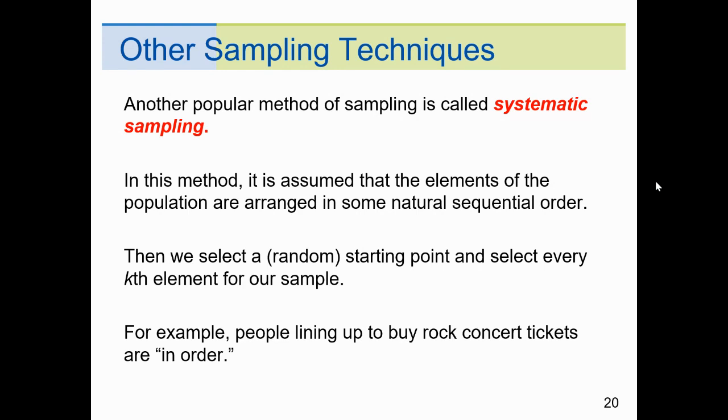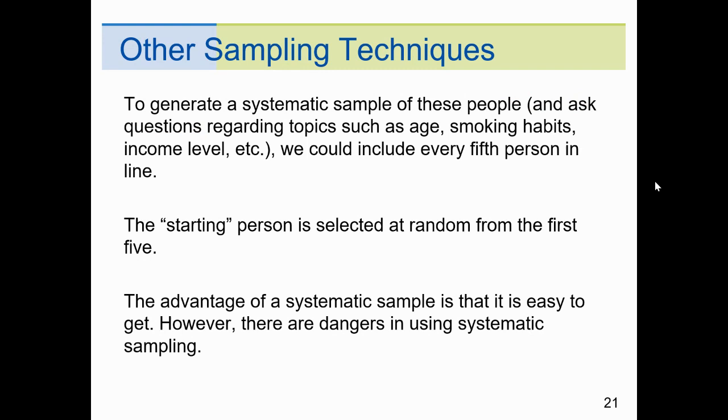All right. It's good advice to be very cautious indeed when data come from methods of convenience sampling. You want to get an idea of what people think about anything going on. You call up five of your friends. Now, if they're your friends, chances are you share something in common. So chances are they're going to think the same way you're going to think. So the results from that sample would be really skewed. Another popular method is called systematic. Now, the word here, again, the root word system kind of gives it away. In this method, it's assumed that the elements of the population are arranged in some natural sequential order. And then we select a random starting point, select every case element.